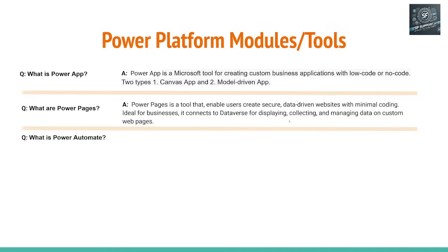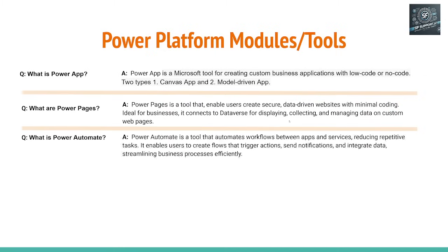What is Power Automate? Power Automate is a tool that automates the workflows between apps and services, reducing repetitive tasks. It enables the users to create flows that trigger actions and send notifications.